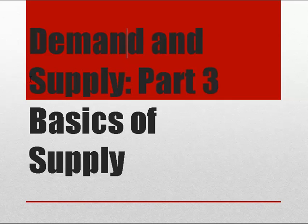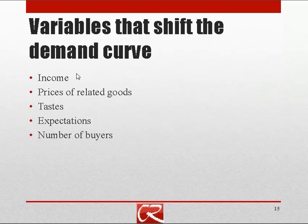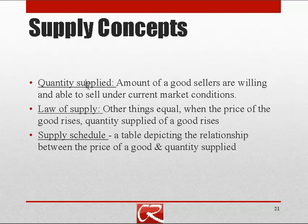Now let's turn to the supply side of the demand and supply model. We are going to have some of the same concepts as we had in demand, but we're going to change the word to supply. The quantity supplied is the amount that sellers are willing and able to sell under current market conditions — that would include the cost of their inputs, the price that they're being offered, and all sorts of other things.